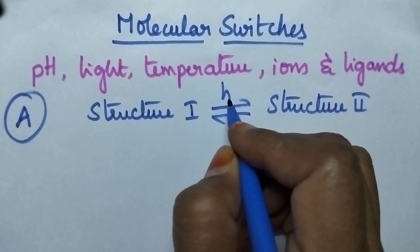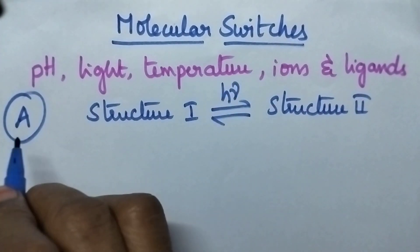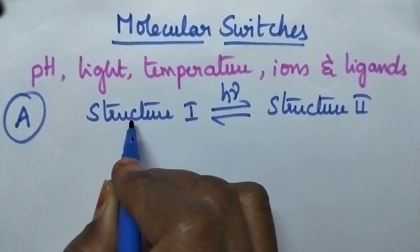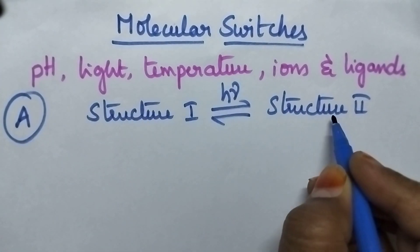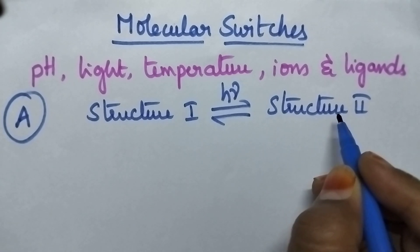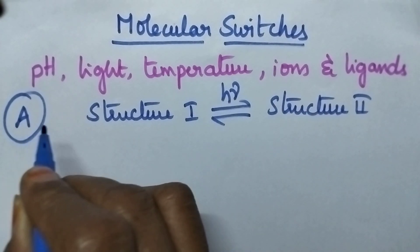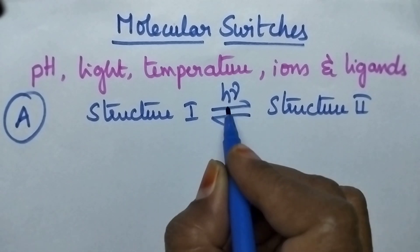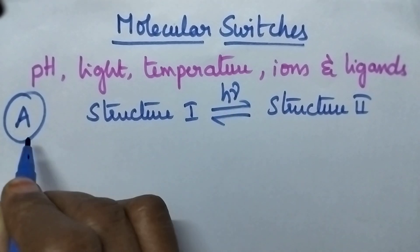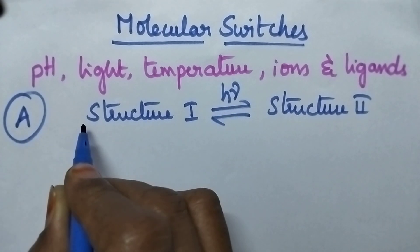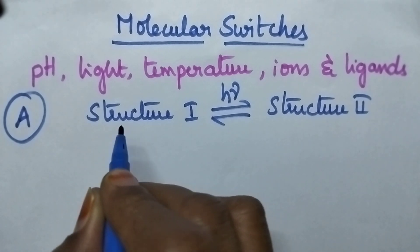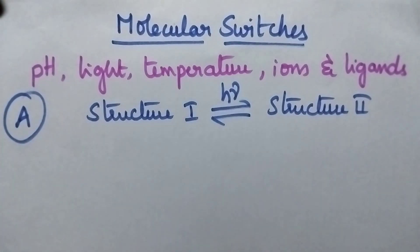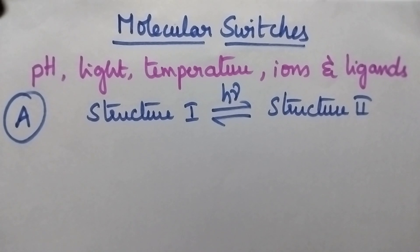In the presence of light, molecule A will modify its structure from structure 1 to structure 2. So molecule A can be considered as a molecular switch, because in the presence of light radiation, this molecule is capable of modifying its structure from one form to another form, and hence A can be called as a molecular switch.